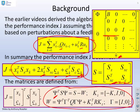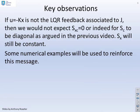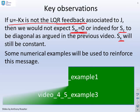The key observations. If u equals minus kx is not the LQR feedback associated to this performance index, then you would no longer expect Sxc to equal zero, or you would no longer expect Sc to be diagonal, as we argued in the previous video. Sx will still be constant because the arguments for that will be the same. We'll use some numerical examples to reinforce that this is indeed the case.